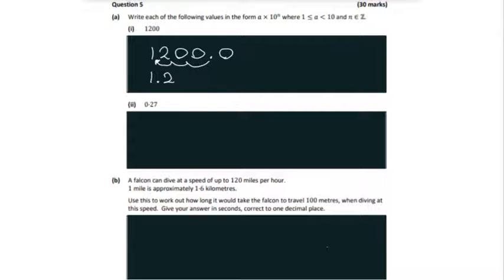This means that n is equal to plus 3. So the scientific notation format is 1.2 multiplied by 10 to the power of 3. Now on to part 2 where we have a decimal.